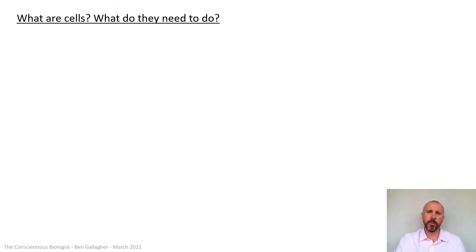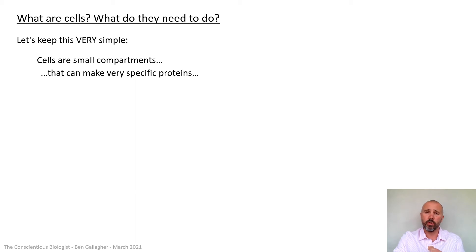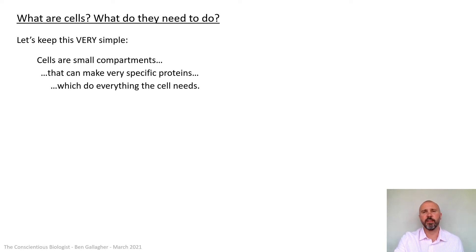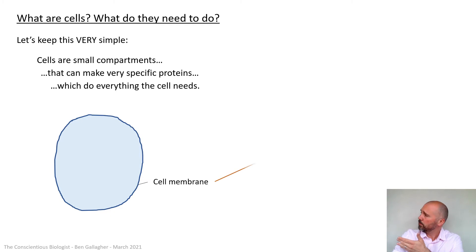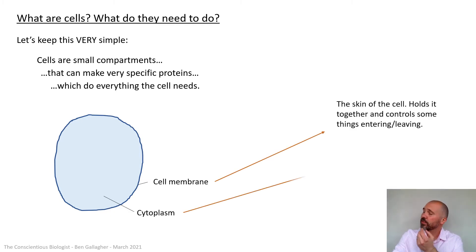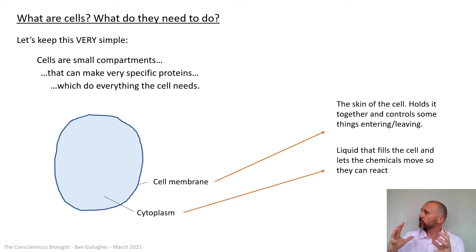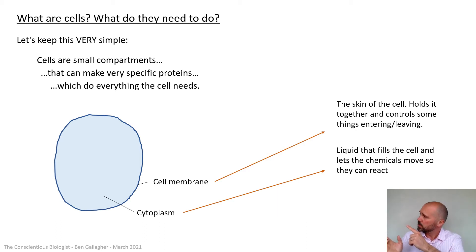Let's move on to looking at cells themselves — question one and two from those big five: what are cells and what do they need to do? Cells are just very small compartments that can make specific proteins, which do everything the cells need. Proteins do pretty much everything for a cell to maintain its metabolism and stay alive. In order to make proteins, we need some very specific things. First, you need the two things that make you a compartment: the cell membrane, and inside it, the cytoplasm — which creates a 3D environment for all the chemicals to float around, bounce into each other, and react.